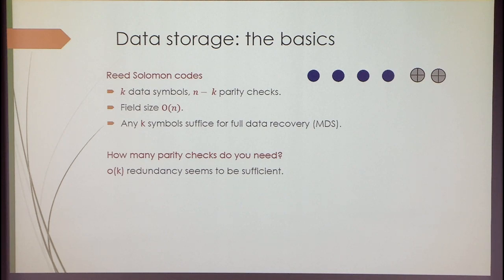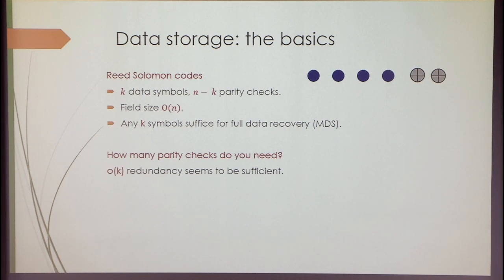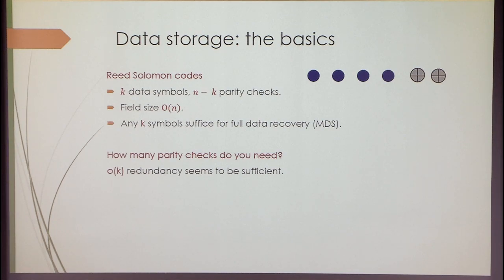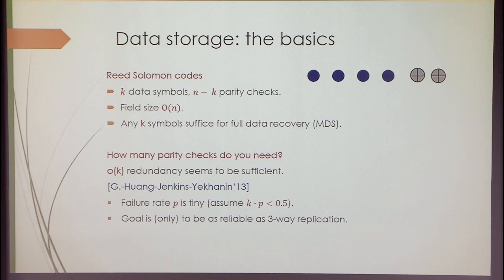What parameters of n and k should we be using in practice? We were talking about 6,4 Reed-Solomon codes as in RAID. Why this setting? Could you do something differently? From a communications perspective, when you transmit over a channel with a fixed failure probability p, as codes grow longer you expect redundancy to scale linearly. In storage, it seems people do not scale redundancy linearly. This is actually important to what I'm going to talk about.